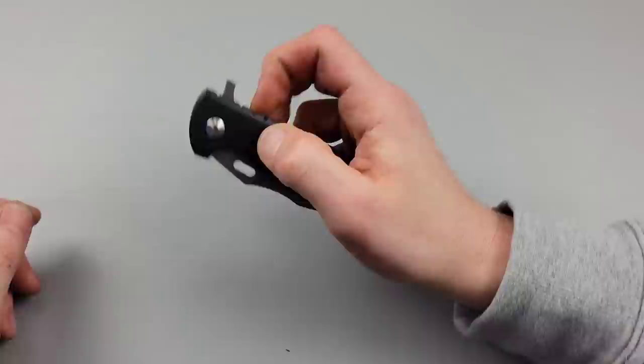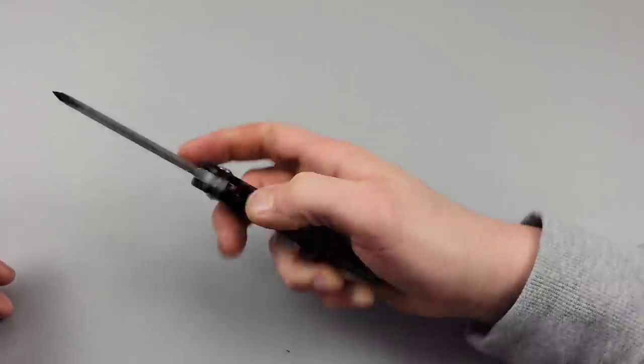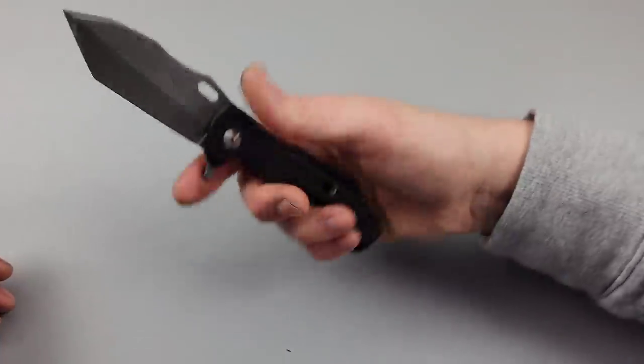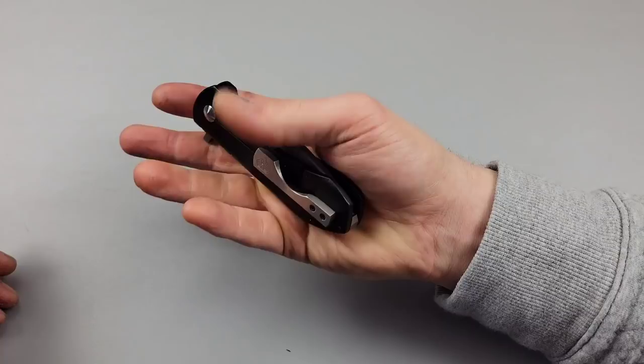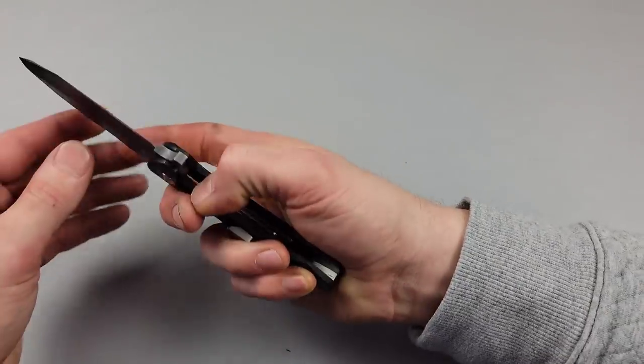Cause this detent is heavy. You can see how big the flipper tab is. That's the primary way to flip it. You can reverse flick. You just had to give it a little pop. You can see how heavy that detent is when I close it.